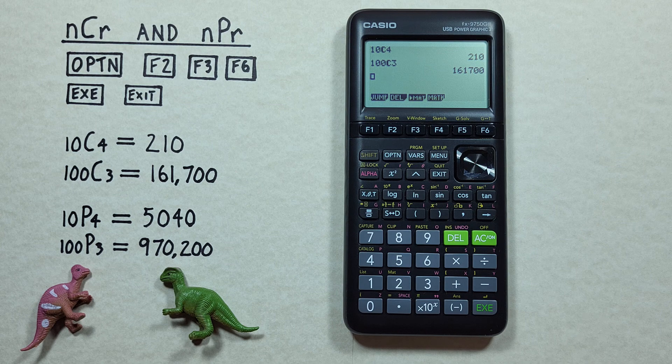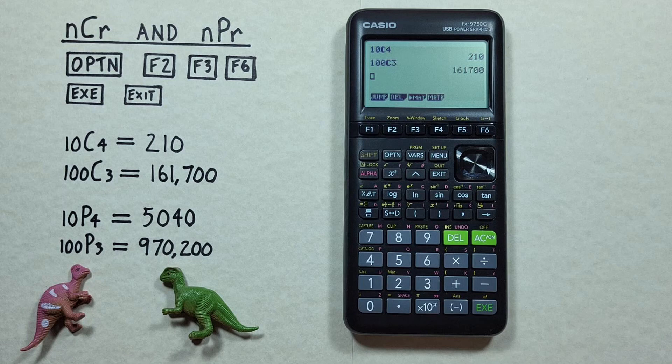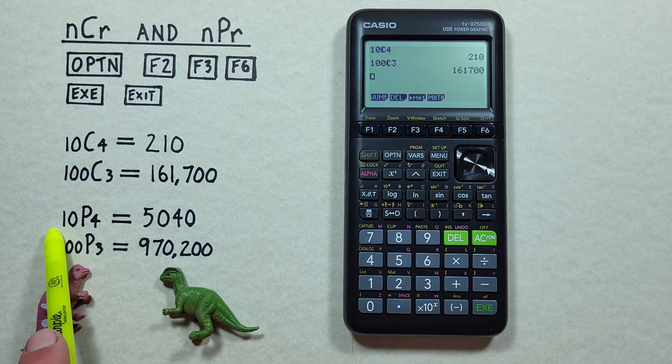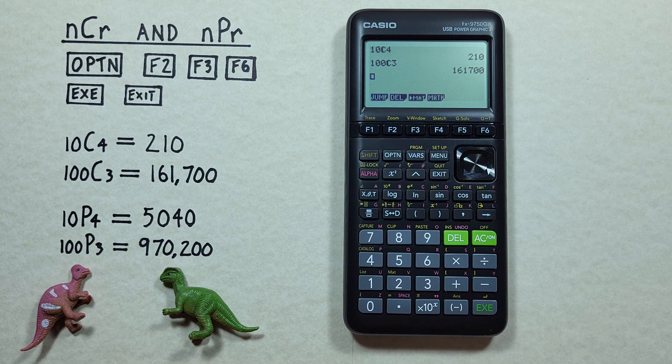We also have permutations. Permutations are when we choose objects from a set, and the order that they're chosen does matter. So, for example, if we had 10 objects and wanted to choose 4 permutations, we would do it like this.